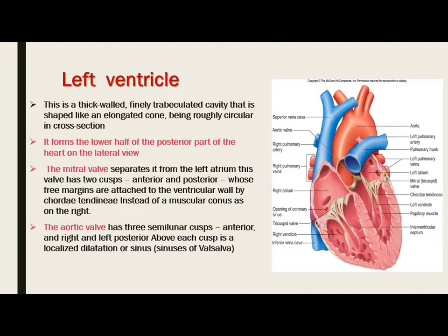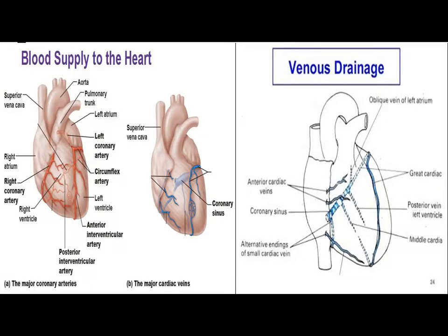The aortic valve has three semilunar cusps — anterior and right and left posterior. Above each cusp is a localized dilatation or sinus, the sinus of Valsalva. The right ventricle and inferior wall of the left ventricle are supplied by the right coronary artery, which is a branch of the right anterior sinus of Valsalva. The right coronary artery passes downward to the right of the pulmonary trunk to reach the anterior atrioventricular groove, where it anastomoses with the left coronary artery, giving branches to the atria, ventricle, sinoatrial node, AV node, and conus branch.